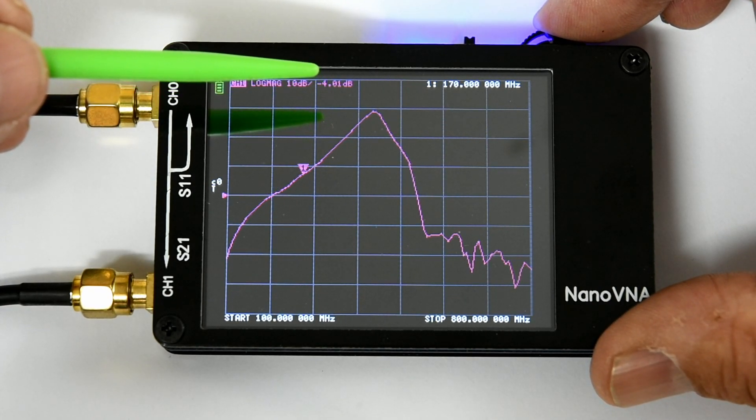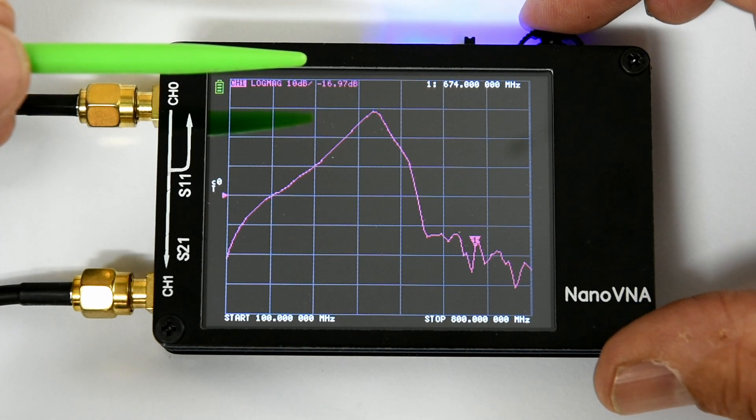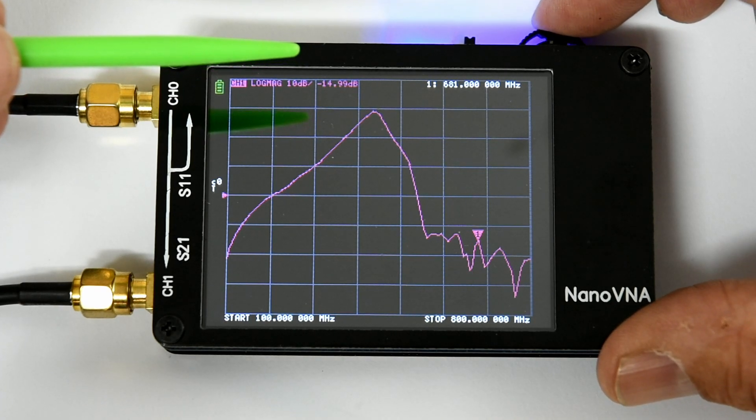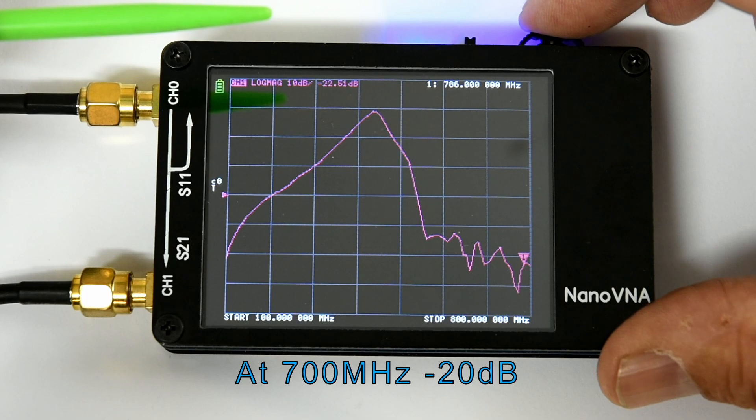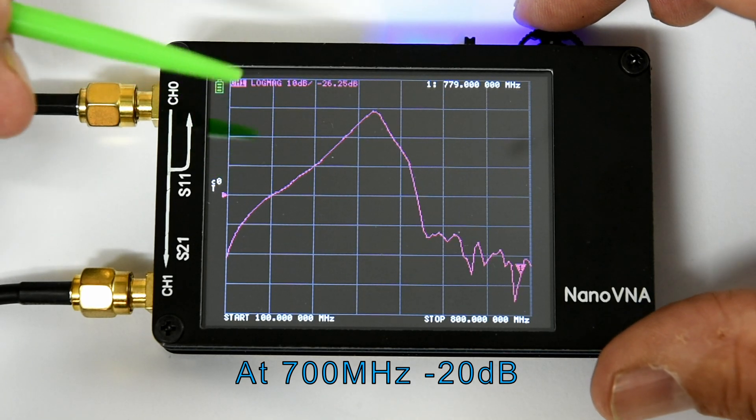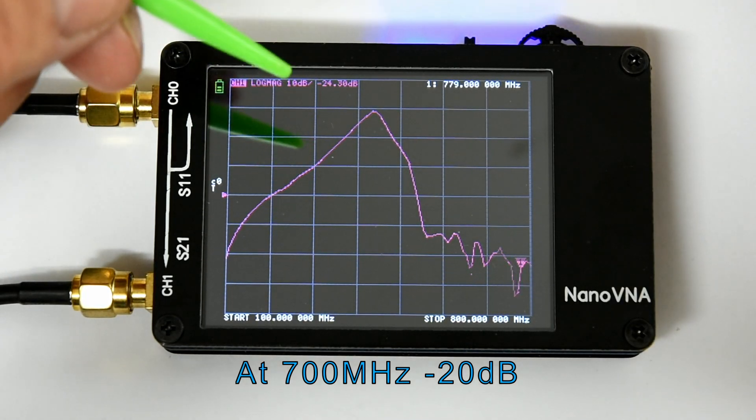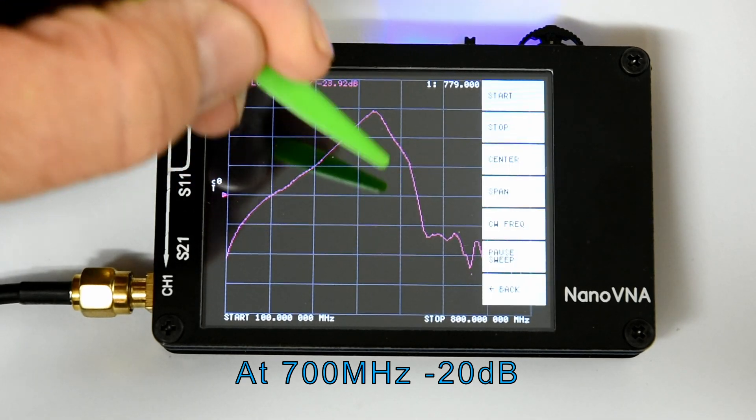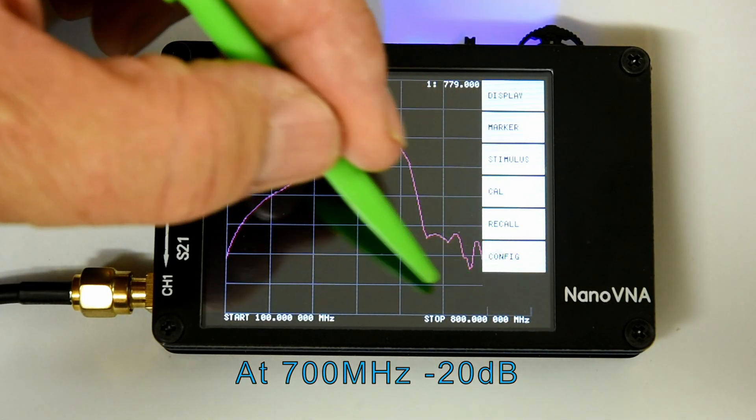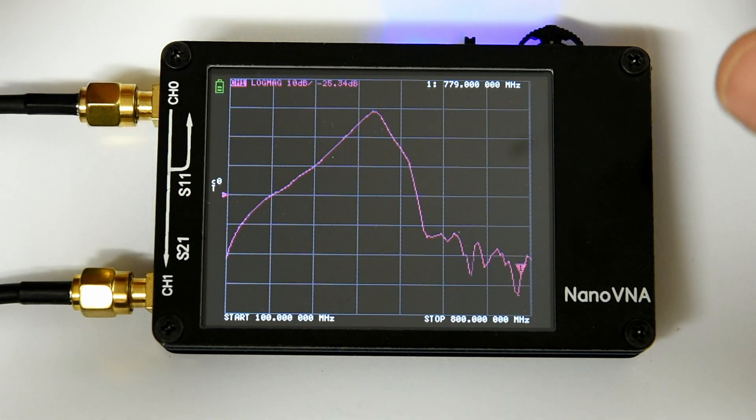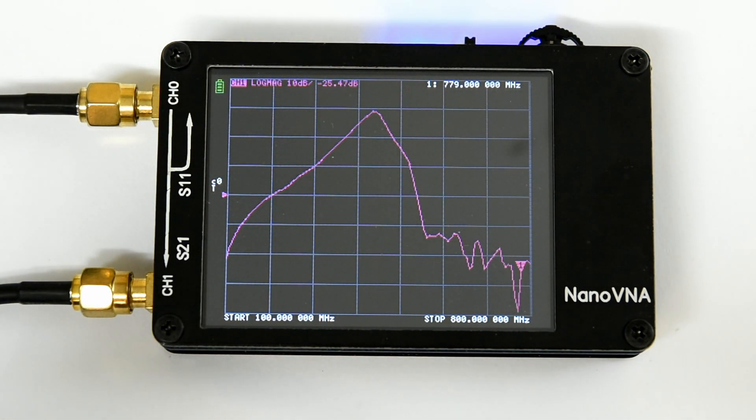You go up to the higher frequencies. Pretty quickly drops off. Yeah, 700 odd meg. We're getting, you know, minus 20 dB. That's also pretty good. Yeah, I'm happy with that as a valuation. So we've got the amplifier functioning pretty normally.